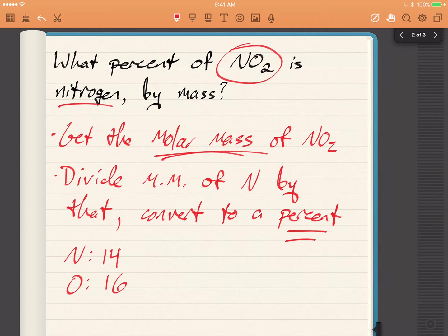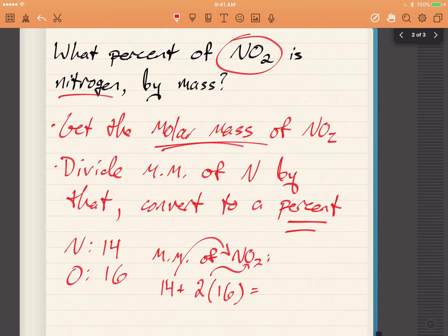So the molar mass of NO2 will be 14 plus, that's from the nitrogen, right? But then plus 2 copies of it for the 2 copies of the oxygen molecule, the oxygen atom.